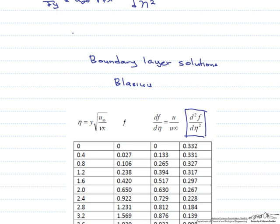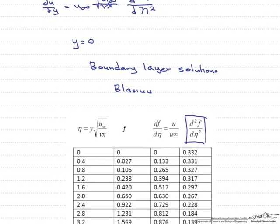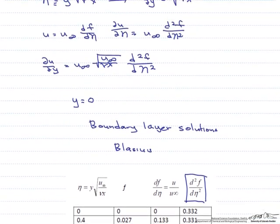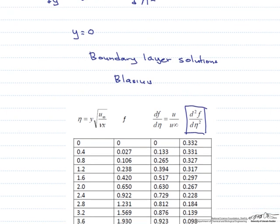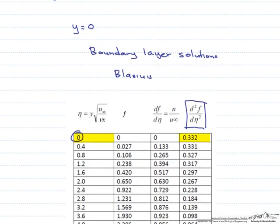If you recall, we are looking for y equals zero, which is the surface of the plate. And let's go back and see what our definition for eta is. What we realize is if y equals zero, eta equals zero. Going back to this chart, eta equals zero. Therefore, our d squared f d eta squared equals 0.332.